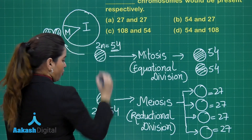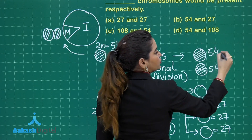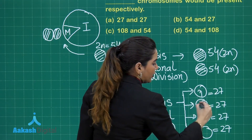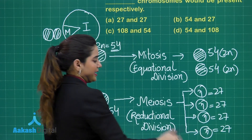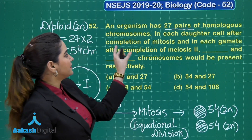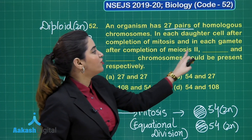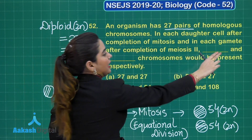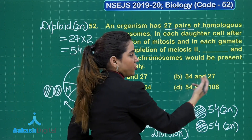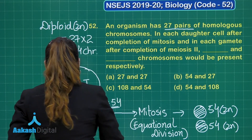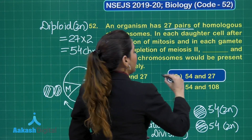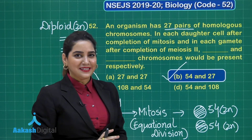So to summarize: 2N = 54, and after mitosis the daughter cells are again 2N = 54 (diploid state), while all gametes after meiosis are haploid with N = 27. As asked in the question — chromosomes after mitosis and in each gamete after meiosis 2 — the answer is 54 after mitosis and 27 in the gamete after meiosis. The question came from cell cycle and cell division. The answer is option B.